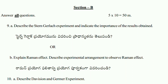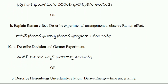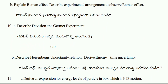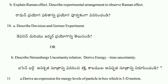Describe the experimental arrangement to observe Raman effect. Question ten A: describe the Davisson and Germer experiment. And ten B: describe Heisenberg's uncertainty relation and derive the energy-time uncertainty.